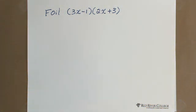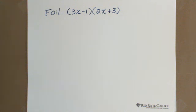That is the most difficult part. I would like to show you the method. But before that we need to review, because factoring and FOIL are opposite operations.